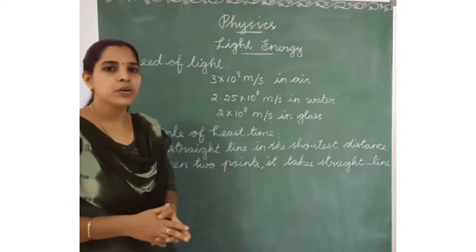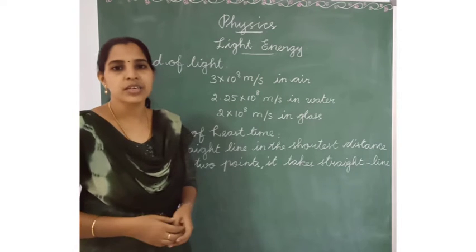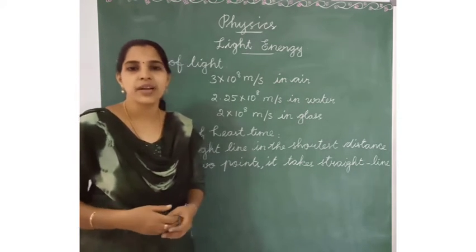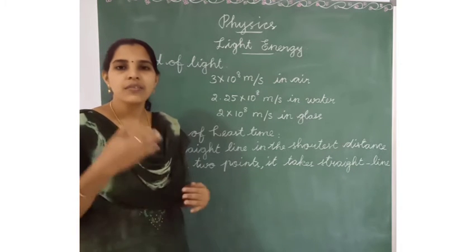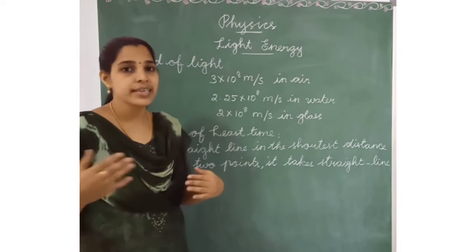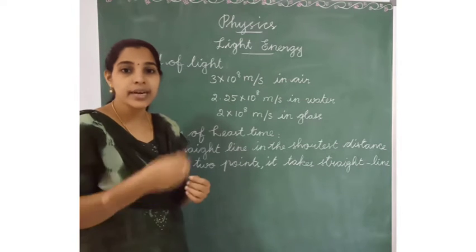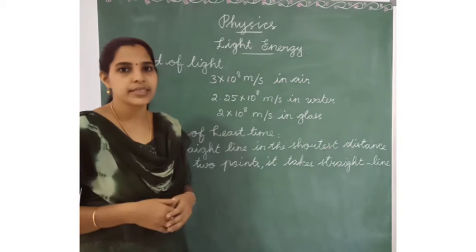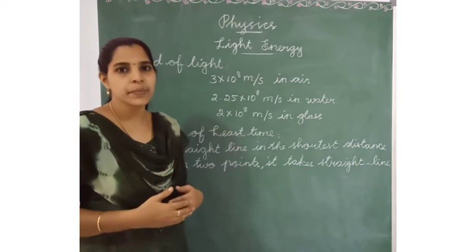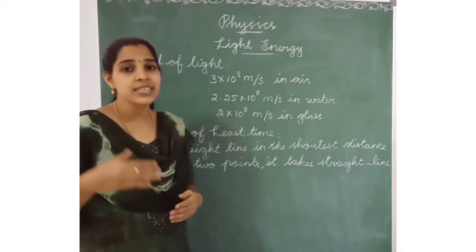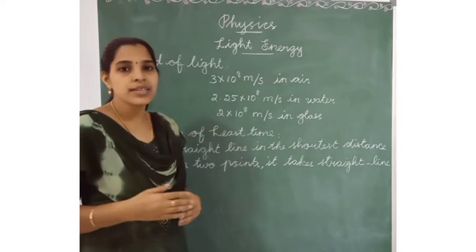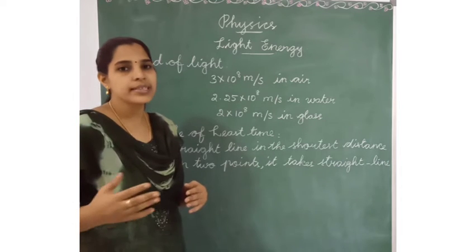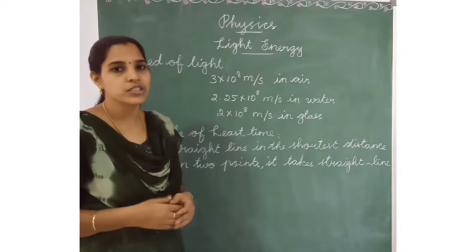We have also learnt about diffuse reflection and regular reflection. What is the meaning of regular reflection? Always light travels in a straight line. One ray of light falls on a smooth surface and is reflected. Regular reflection means parallel rays of light fall on a smooth surface and are reflected parallel to each other.